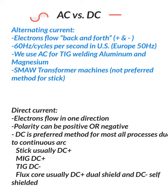Direct current: electrons flow in one direction, the polarity can be positive or negative. DC is by far the most preferred method for all processes due to the continuous arc that it creates.